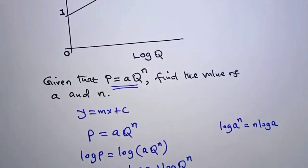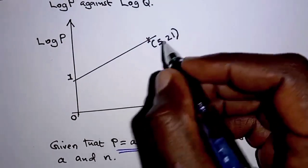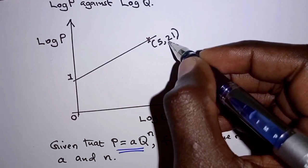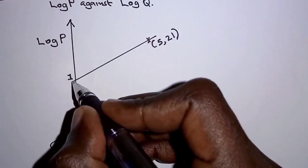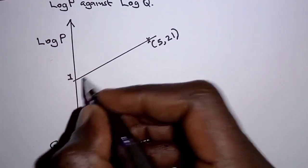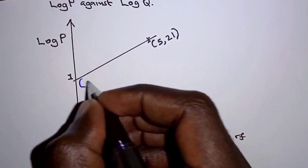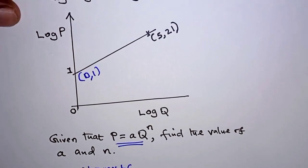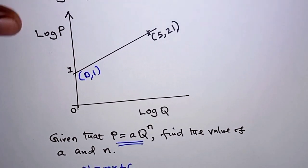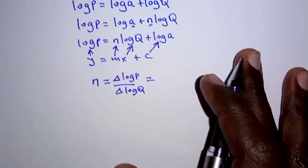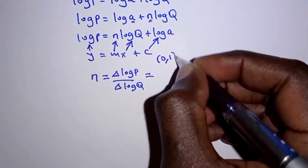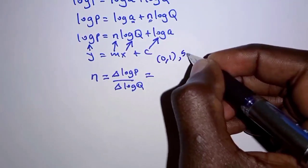That is change in Y over change in X. So we're going to have, we are given two points on the line. So at this point we have (5, 21) and then at the Y intercept we know that the value of X is 0. So the coordinates here we have (0, 1). So we're going to use those two points to calculate the gradient.